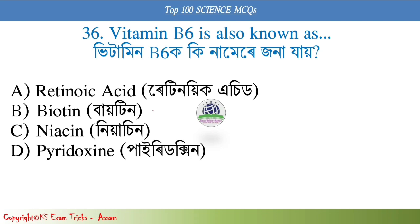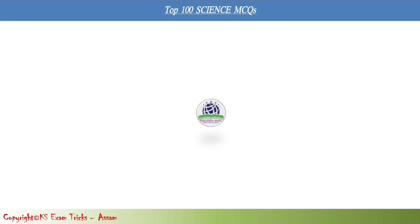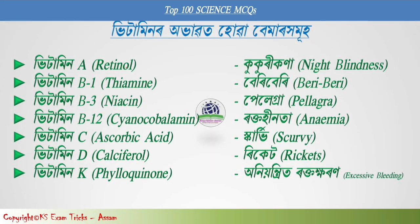Vitamin B6 is also known as — Vitamin B1 is thiamine, Vitamin B12 is cyanocobalamin, Vitamin C is ascorbic acid, Vitamin D is calciferol, and Vitamin K is phylloquinone.